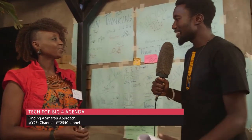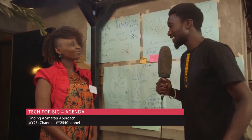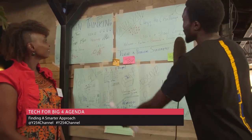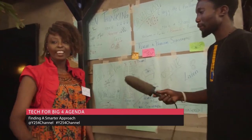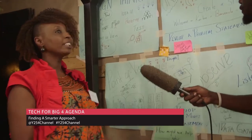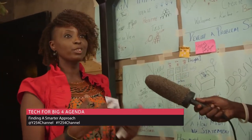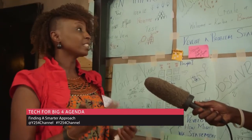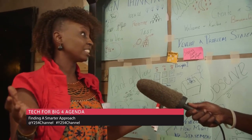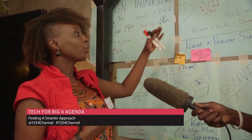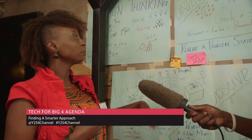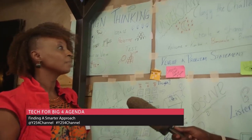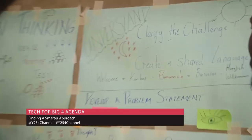They say men are visual beings and I bet it applies also to education. Maybe you can take me through what you have on your board here. There are several steps towards design thinking — about six. There are multiple ways of doing it, but the way I do it, I go through six steps.